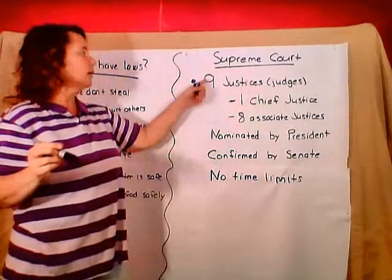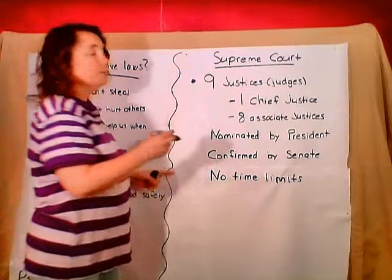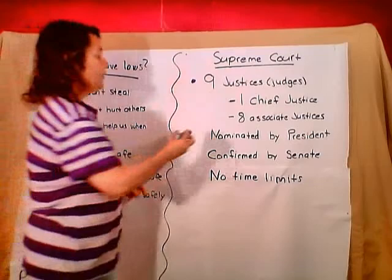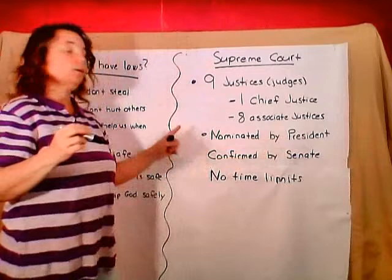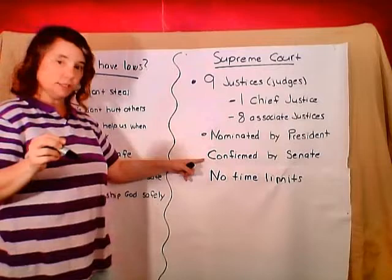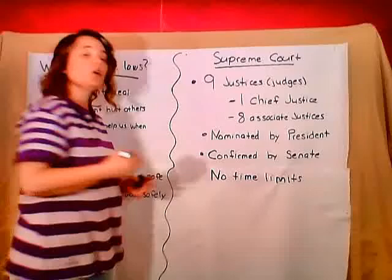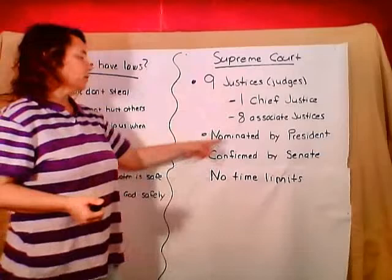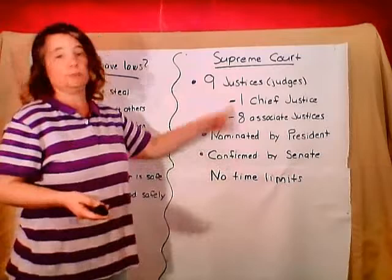Now, remember with the legislative branch and the executive branch we get to vote for the people, vote for the representatives. But in the Supreme Court, nobody votes for the justices. They are nominated by the president — by the executive branch — but the president doesn't get to make sure they stay; he just nominates them. Then the legislative branch — the people in the Senate — get to confirm or agree. If the president nominates a person and the Senate confirms, that person becomes a justice. If the Senate doesn't agree, that person doesn't become a judge and they have to start all over again.